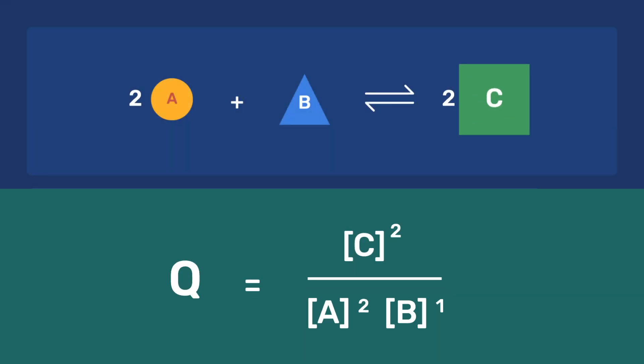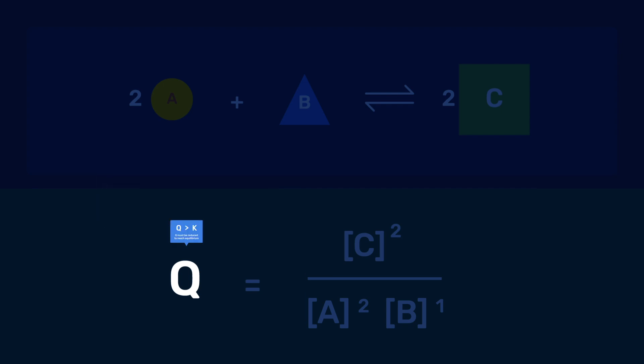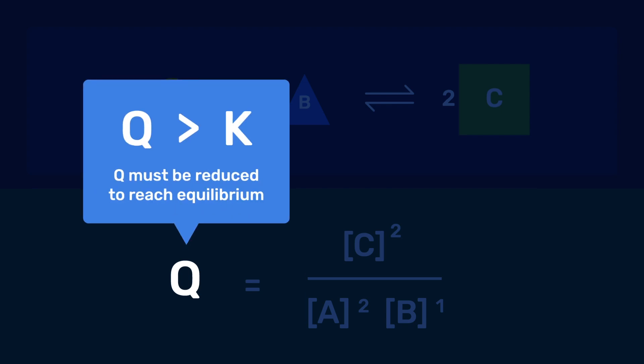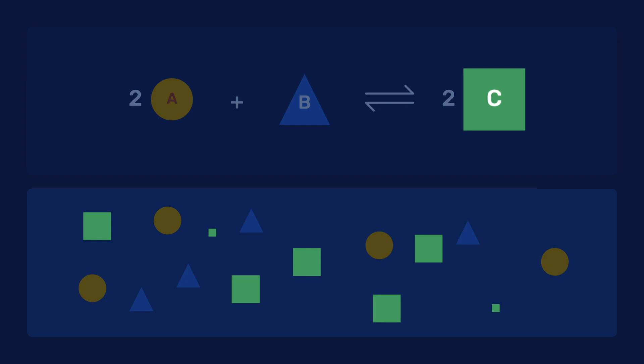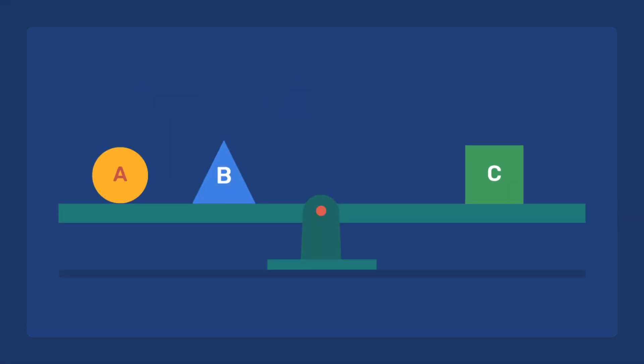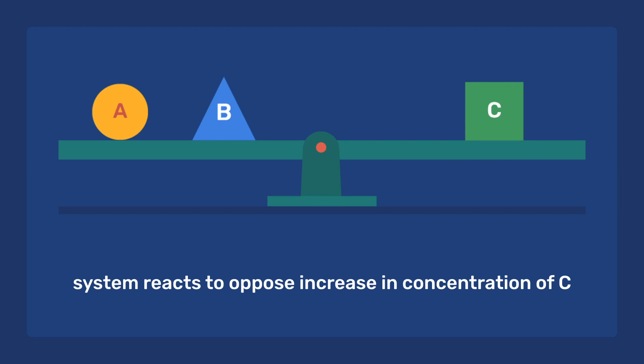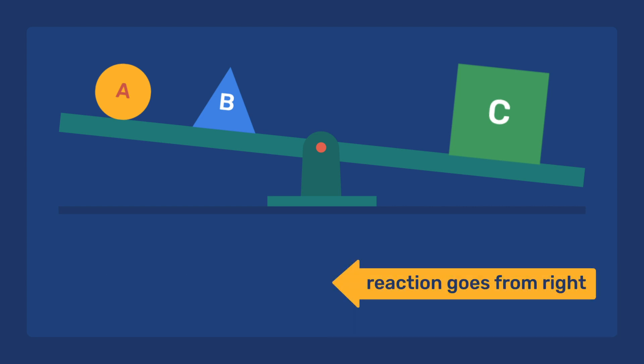By increasing the concentration of C, the value of Q increases. It becomes larger than K and must be reduced. For this, the system reacts by both decreasing the concentration of C and increasing the concentrations of A and B. From the Le Chatelier point of view, the system reacts to oppose the increase of concentration in C so that the reaction goes from right to left.